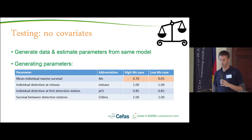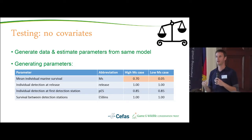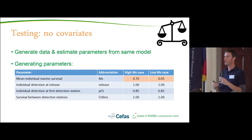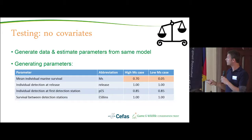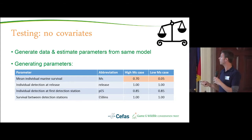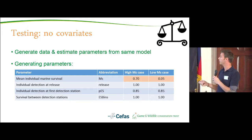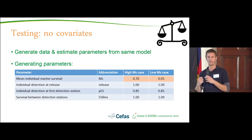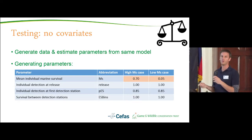First I wanted to test whether the model worked. To do that we generate data and estimate parameters from the same model — a straightforward way to check you can detect a change if there is one. We use the model both to generate data and then fit back to it to see if we recover the generating parameters. The model has relatively few parameters: marine survival, probability of detection at release (fixed at one), detection at the main detection station as a returning adult, and detection between sites, with an assumption of no loss across the three-kilometre stretch between detection sites.